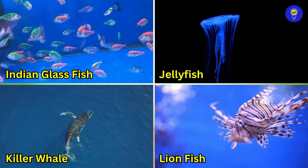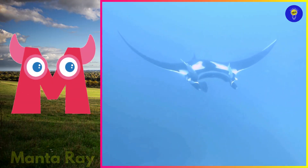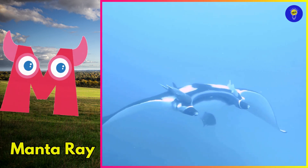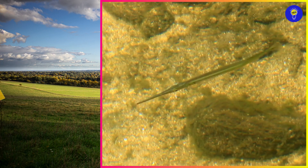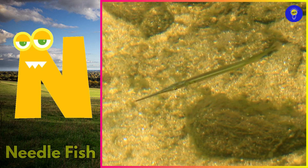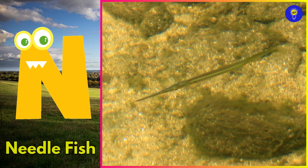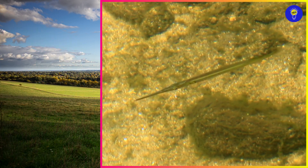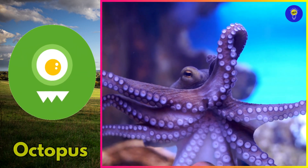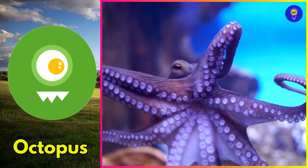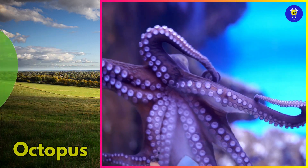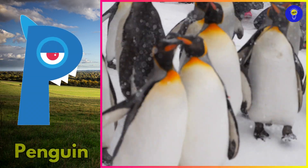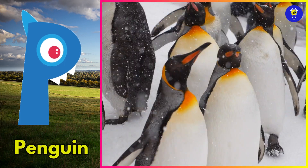M is for manta ray. Muh, manta ray. N is for needlefish. Nuh, needlefish. O is for octopus. O, octopus. P is for penguin. Puh, penguin.